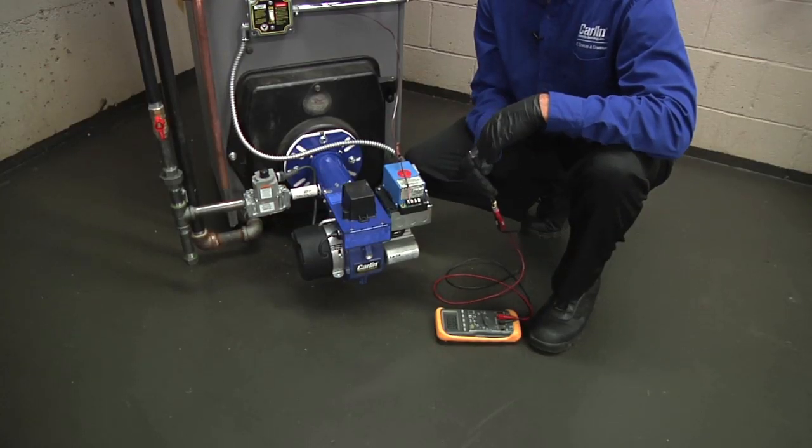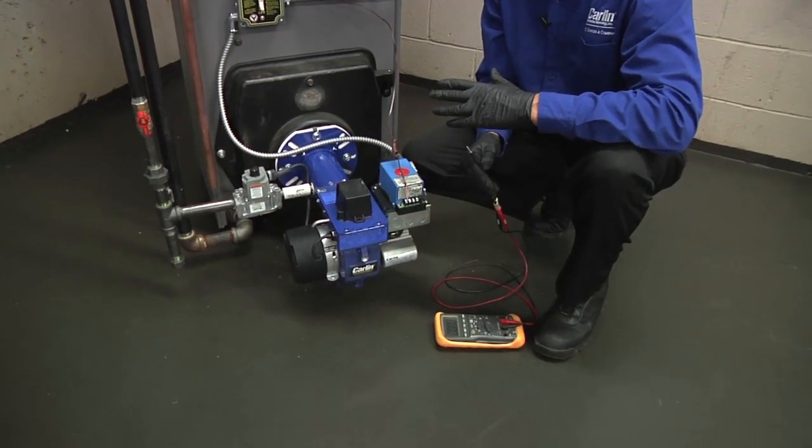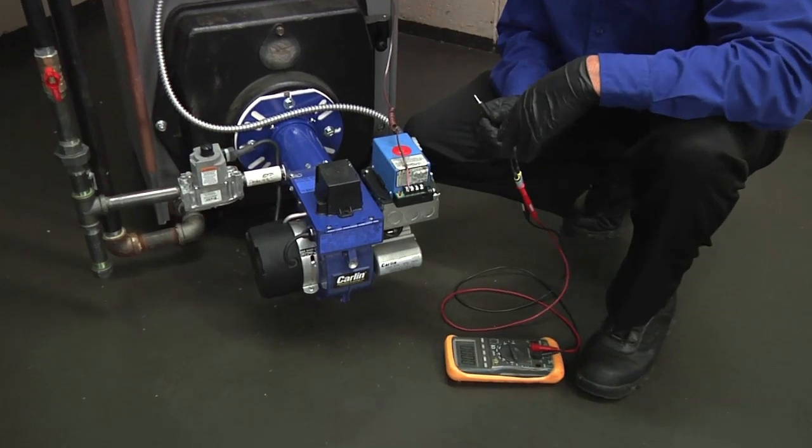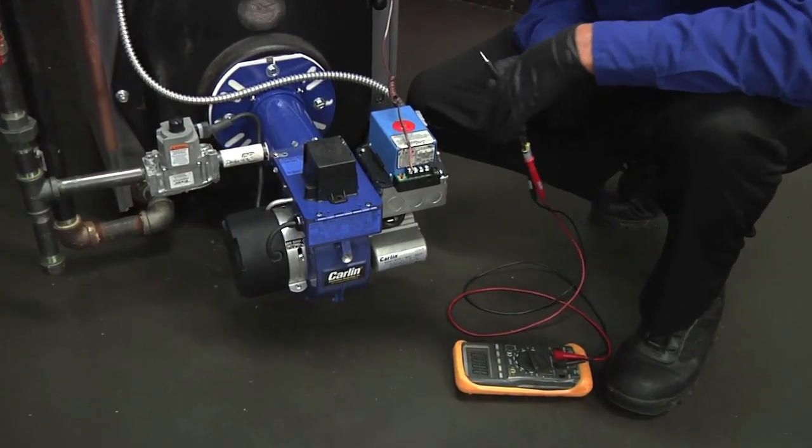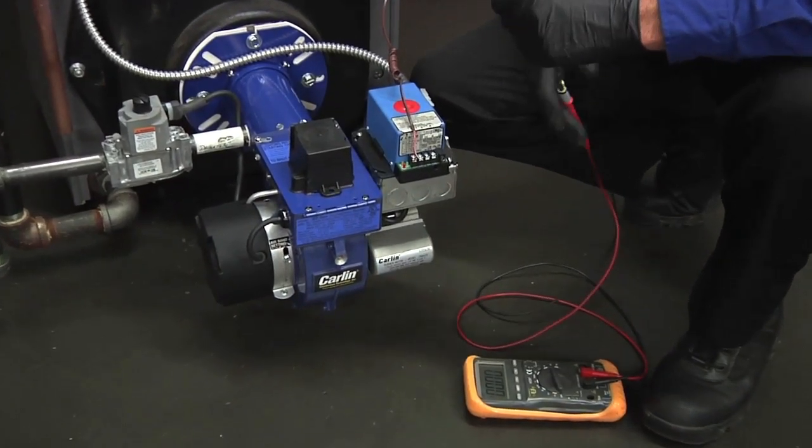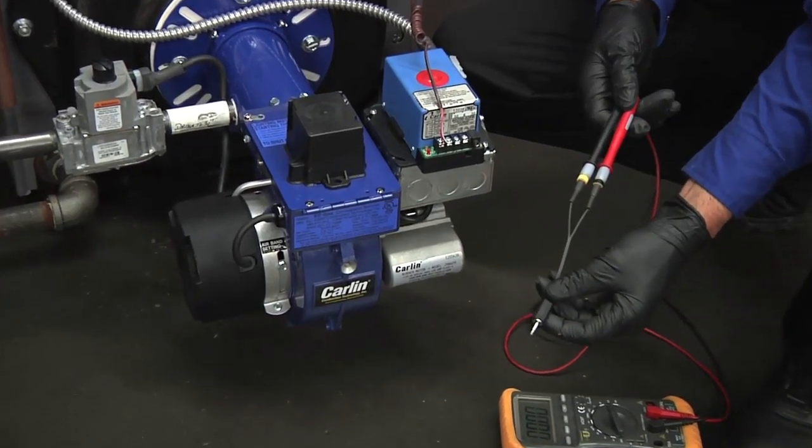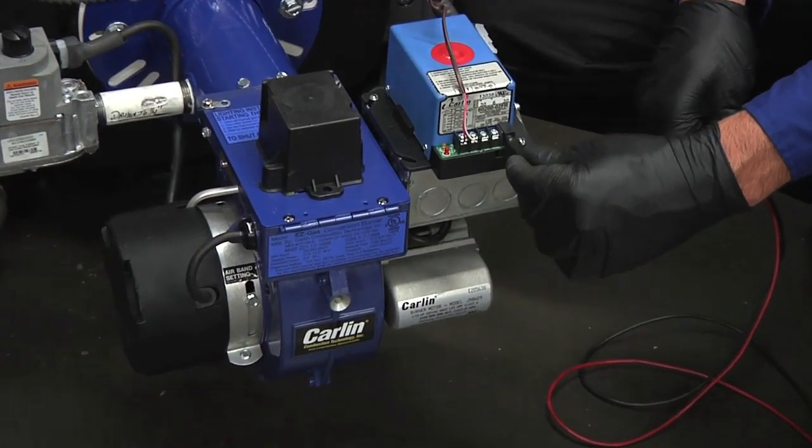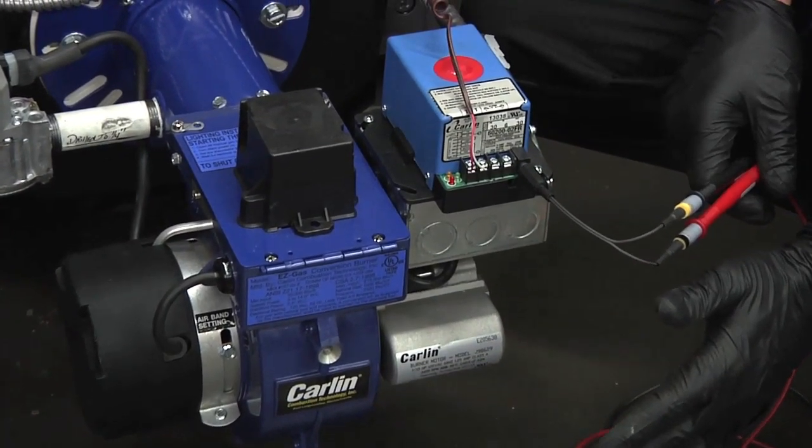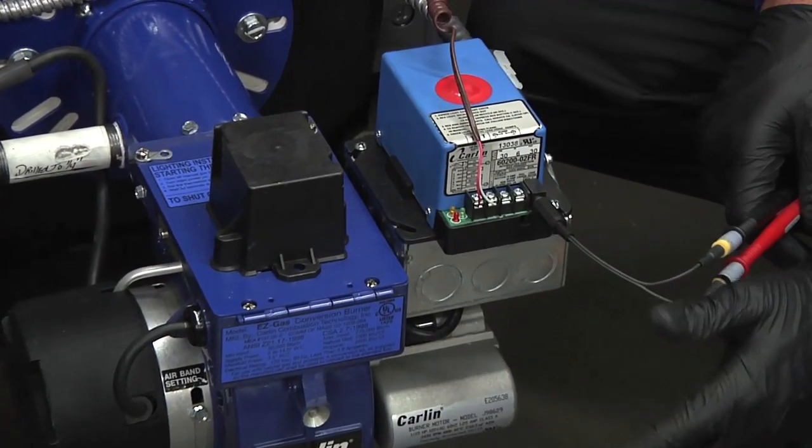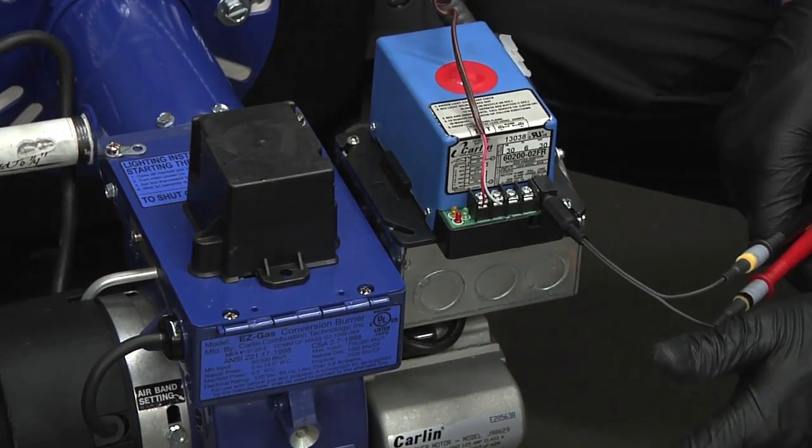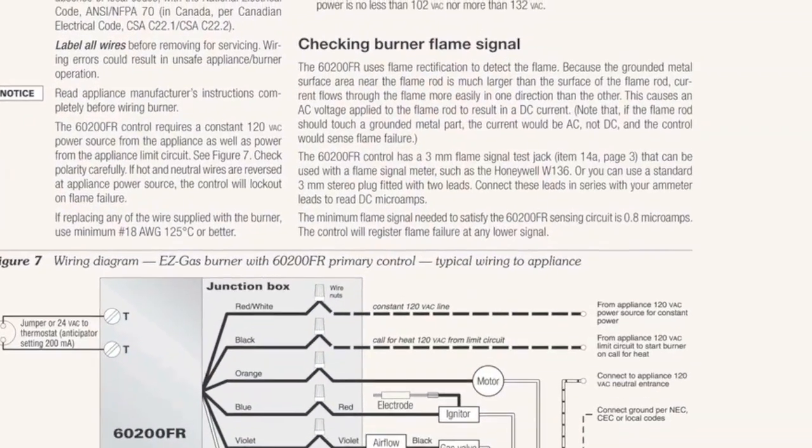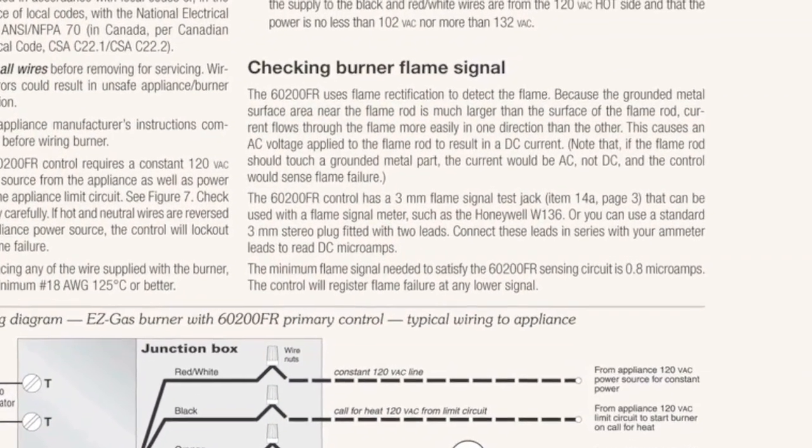Now that you've checked combustion and your EasyGas Burner is completely installed, you're going to want to check your flame signal on the burner. Once the burner starts and the green light is established on the primary control, you're going to want to take your three millimeter plug plugged into your meter and plug it into the front of the control. The minimum flame signal required for the EasyGas Pro Burner is 0.8 microamps. You can read the instructions on how to check this flame signal on page 10 of the EasyGas Pro Instruction Manual.